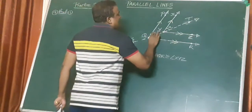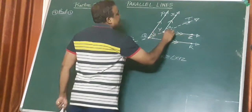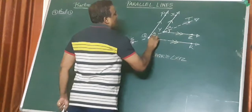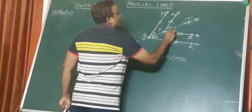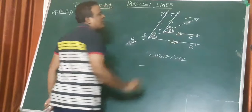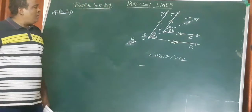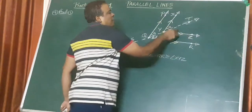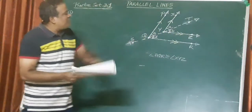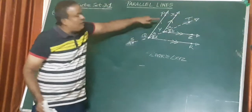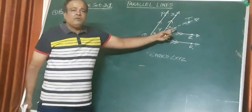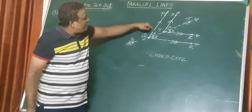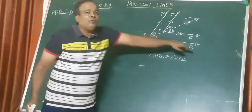Let's call this angle C and this angle D — these two angles are D. And let's say this is B. So we have A and B. Angle XYZ is A plus B — I have cut the angle XYZ into two parts, A and B. So A plus B means angle XYZ, and C plus D means angle PQR.